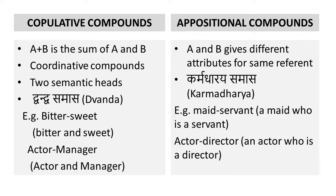Appositional compounds are compounds which give different attributes to the same referent. For example, 'maid-servant' refers to a single referent — a maid who is a servant — but gives that referent different attributes: the attribute of maid and the attribute of servant. Similarly, 'actor-director' refers to someone who is both an actor and a director — one referent with different attributes. The Sanskrit name for appositional compounds is karmadharaya samas.